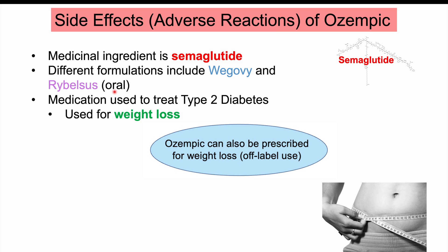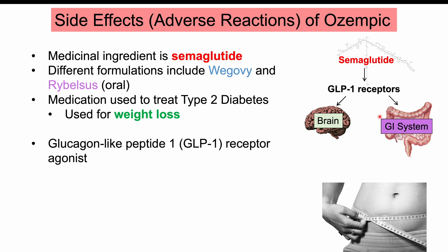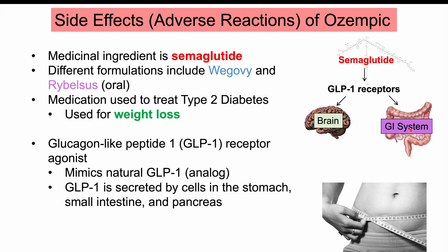Because these medications are all semaglutide, they all have similar effects. Semaglutide is a glucagon-like peptide-1, or GLP-1, receptor agonist, meaning it binds to GLP-1 receptors located in both the brain and the GI system — the stomach, intestines, and pancreas. More specifically, semaglutide is a GLP-1 analog that mimics natural GLP-1, which we secrete naturally from cells in the stomach, small intestine, and pancreas.